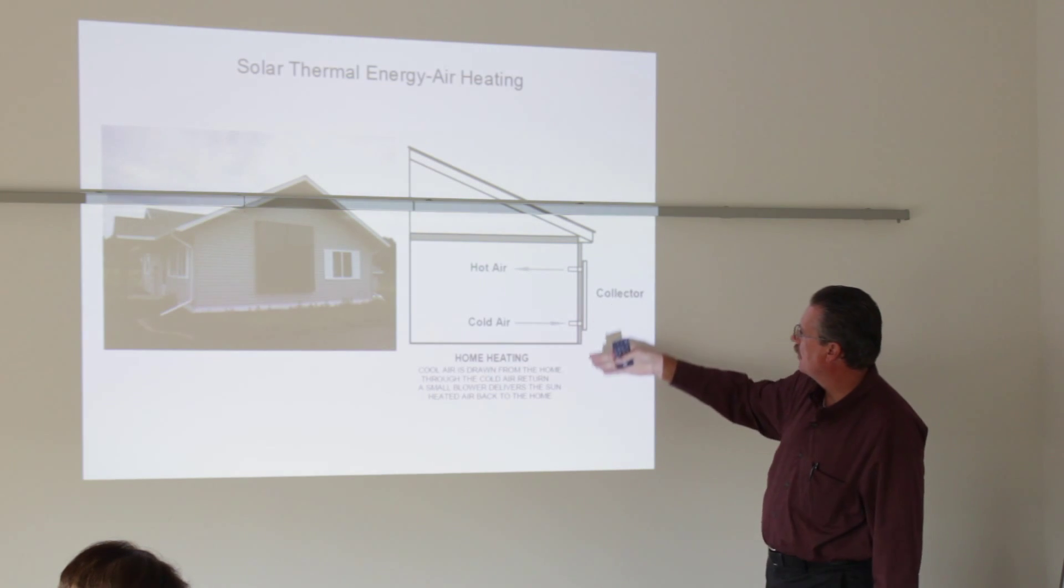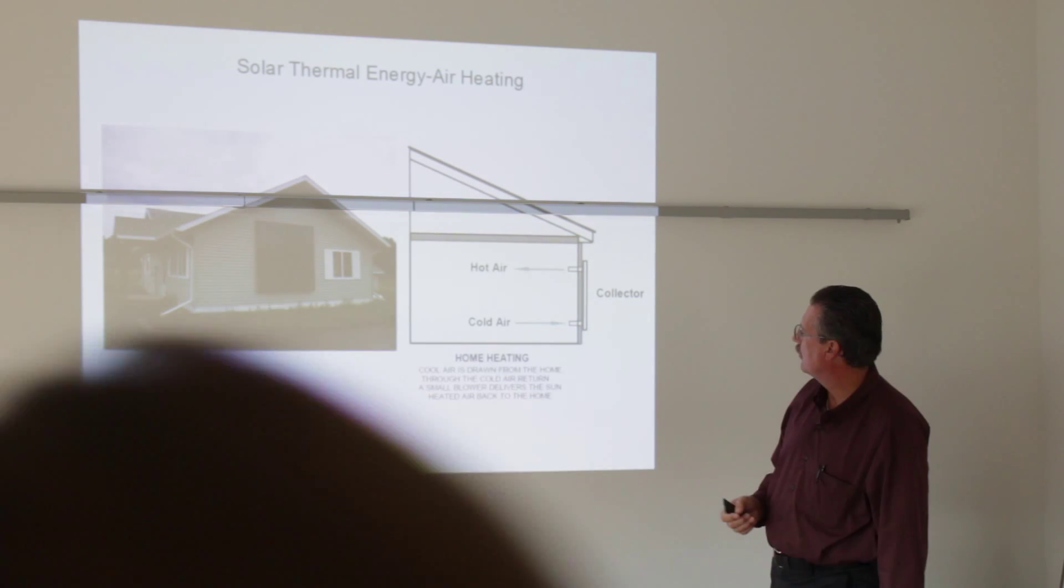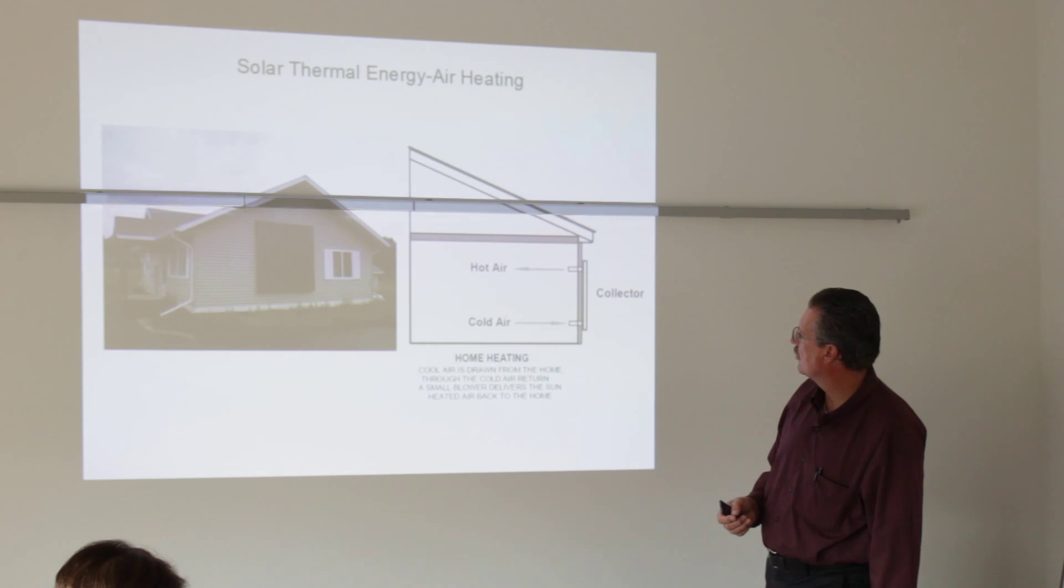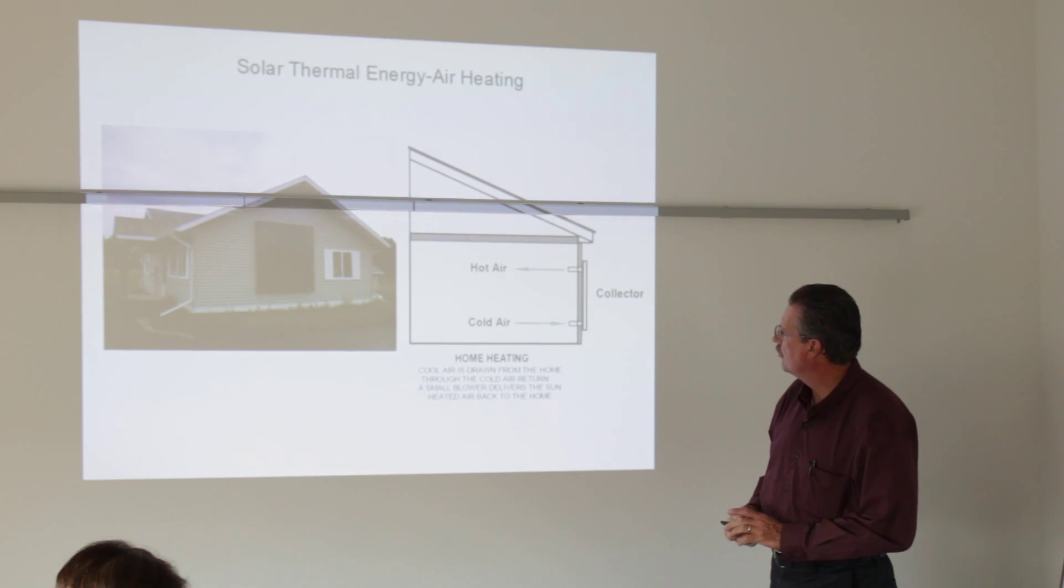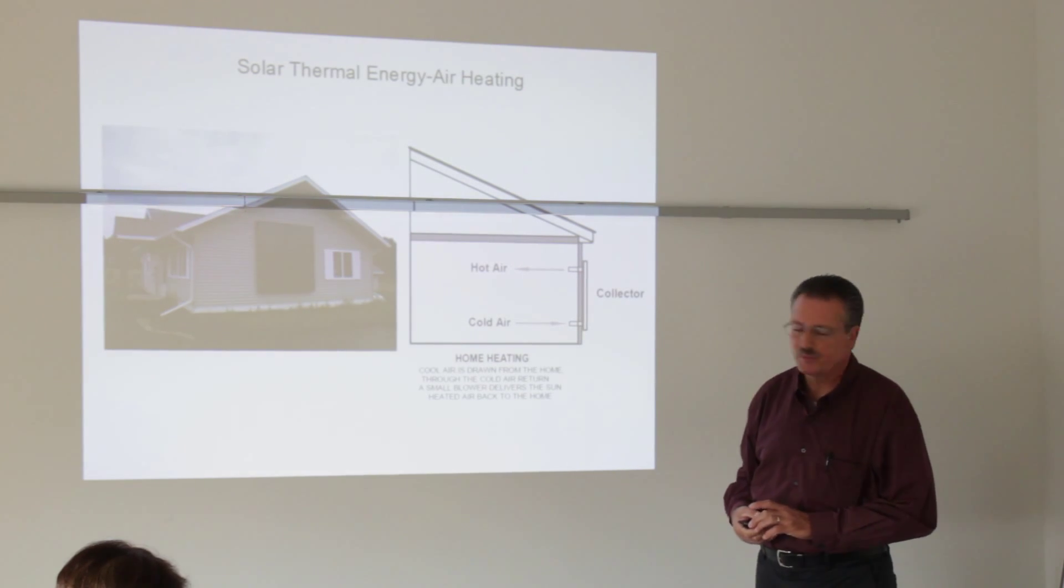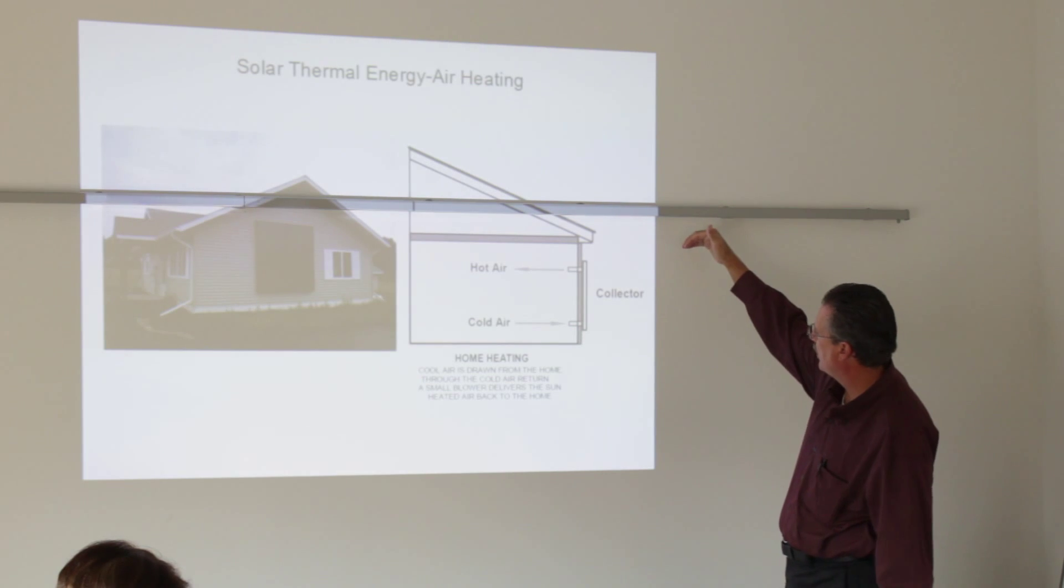Just a quick diagram of how a solar air hot air system will work. Essentially, you mount the collector on the side. I never recommend mounting one on the roof because of the excessive heat gain in the summertime. Your sun angle will be lower in the wintertime.